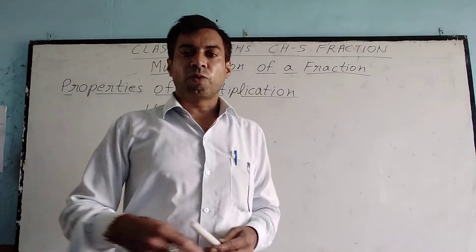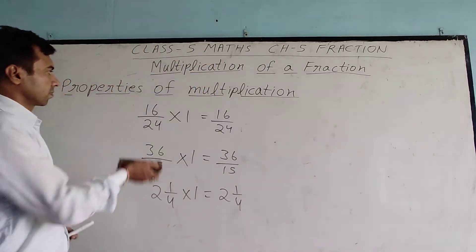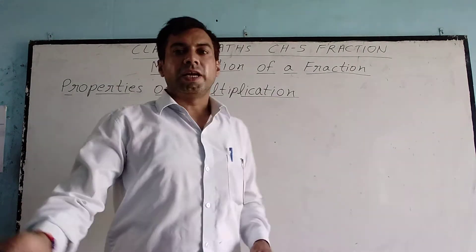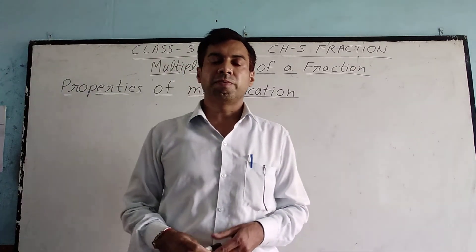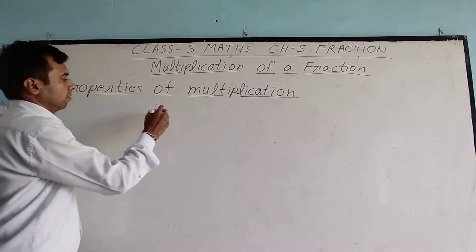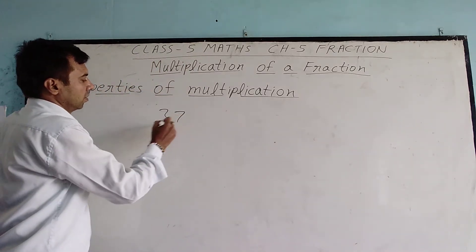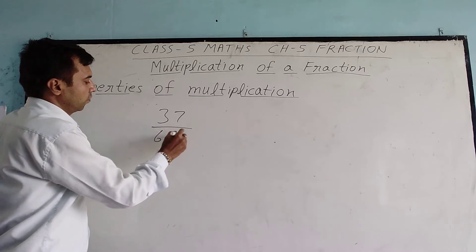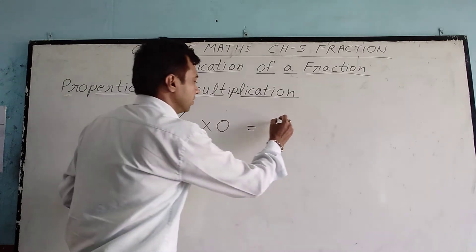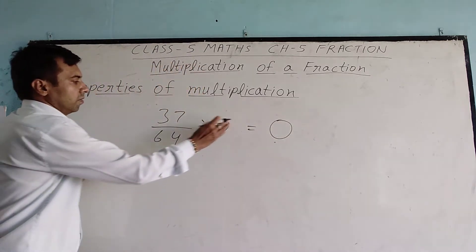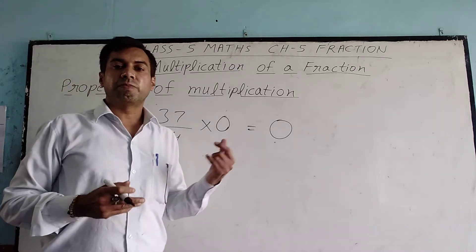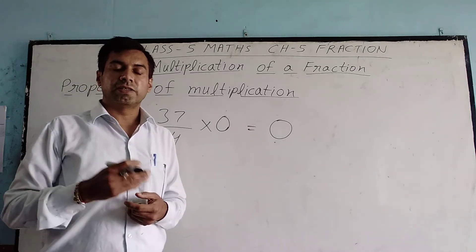Second property: any fraction multiplied by 0, we get the product 0. For example, 37 by 64 multiplied by 0 gives 0. So any fraction multiplied by 0 gives 0.